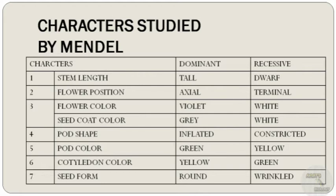For the stem length character of the pea plant, tall is dominant over dwarf. For flower position, axial is dominant over terminal. For flower color, violet is dominant over white. For seed coat color, gray is dominant over white. For pod shape, inflated is dominant over constricted. For pod color, green is dominant over yellow. For cotyledon color, yellow is dominant over green.